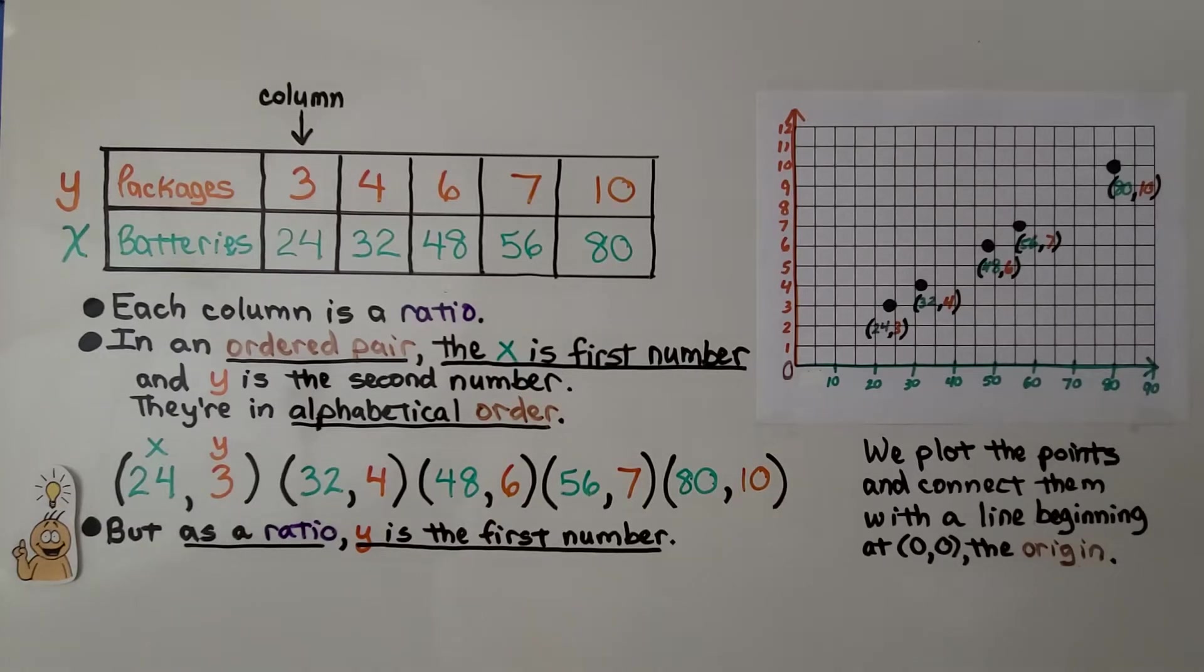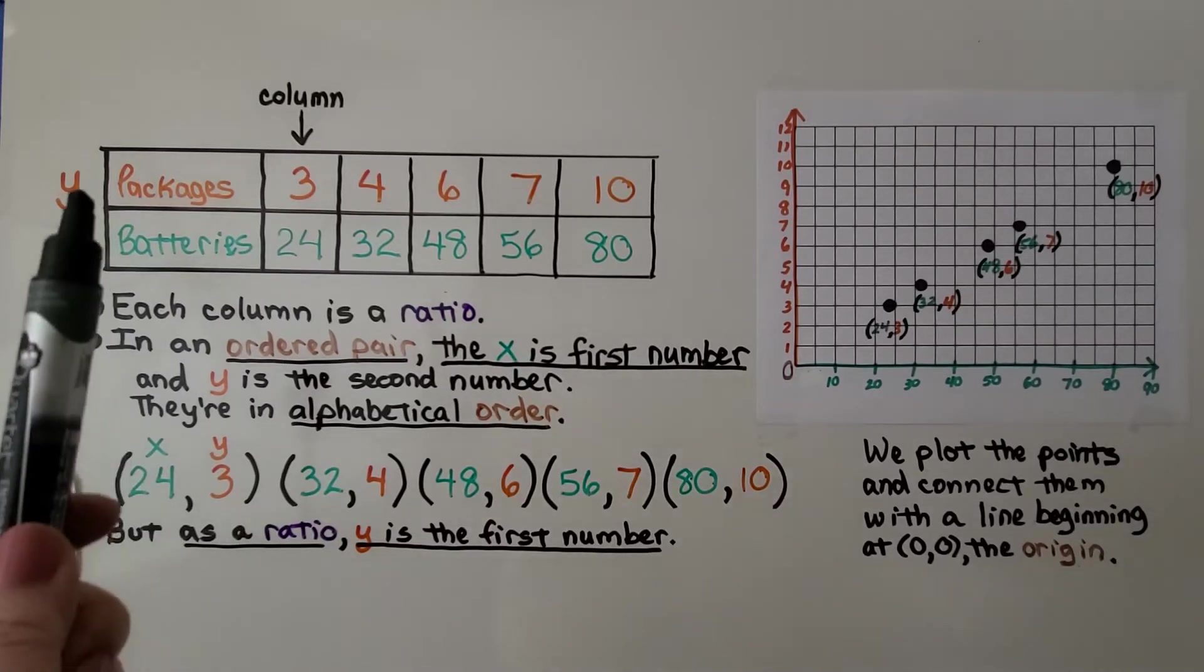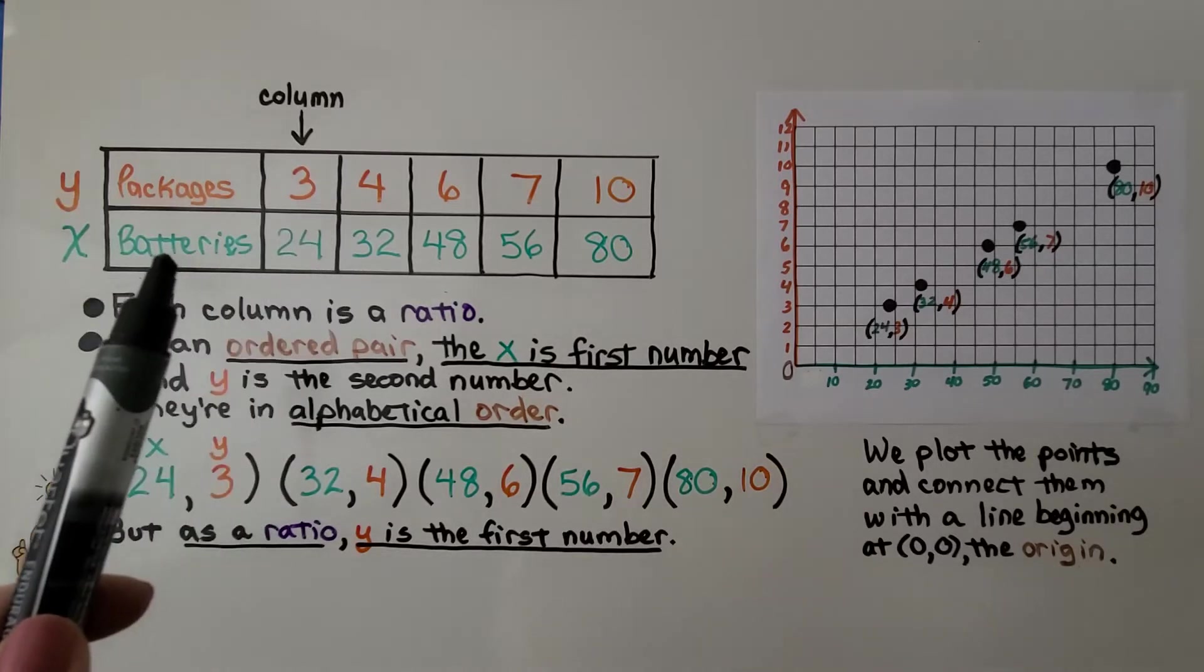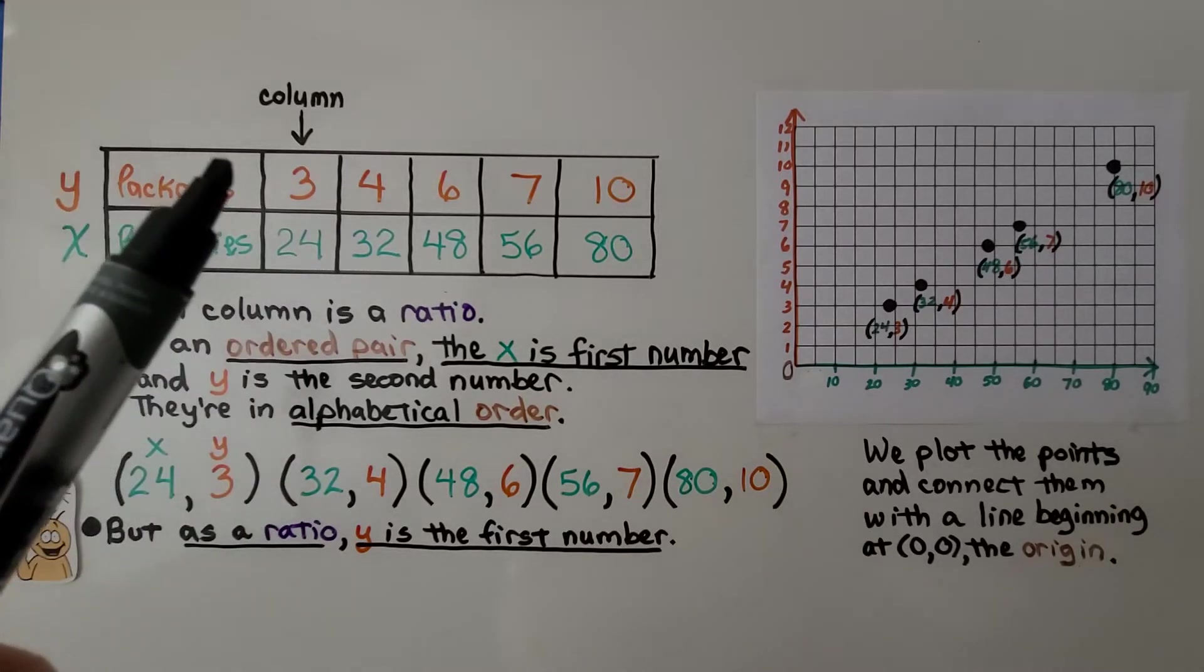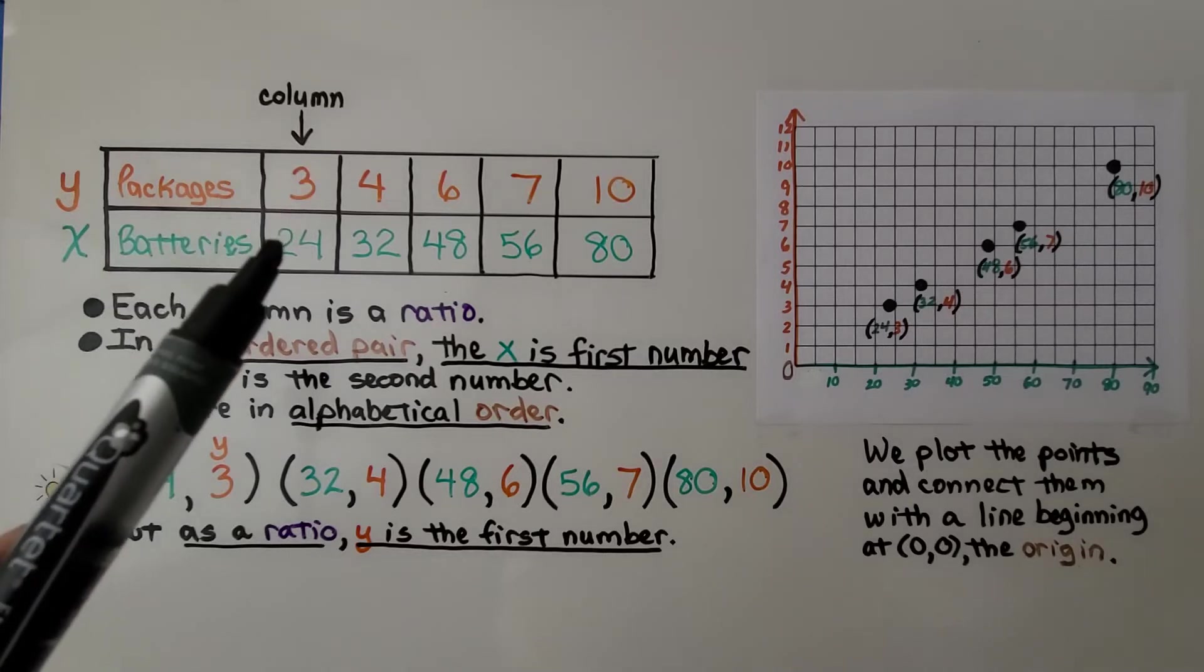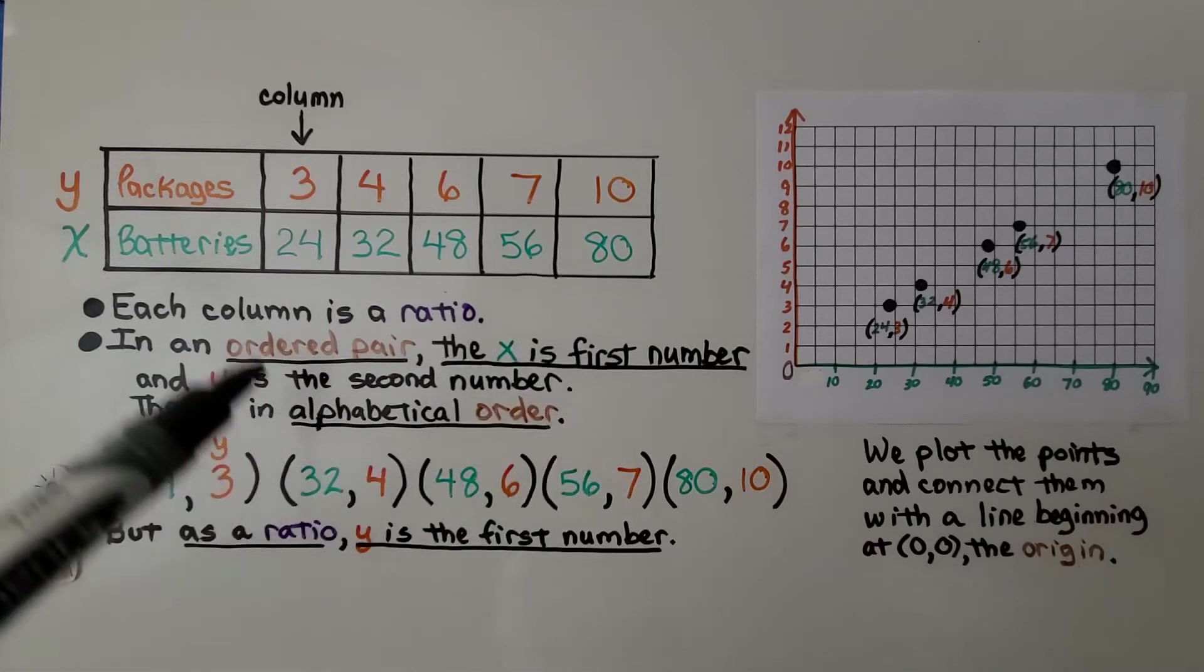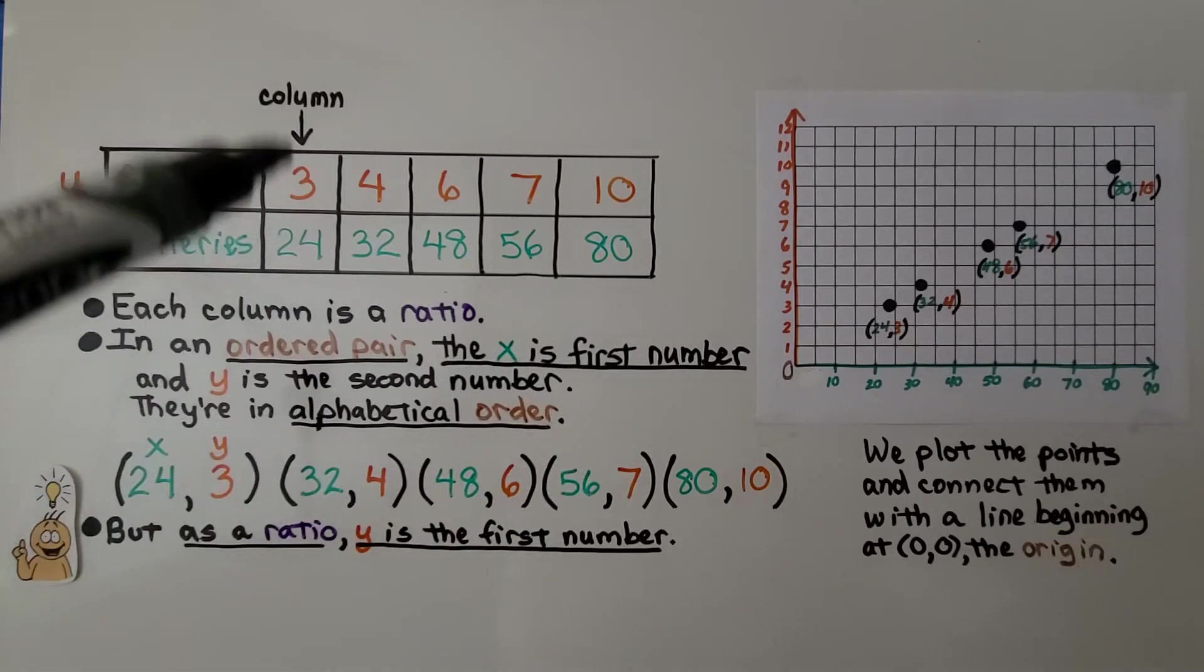In the last video, we did a work problem where we had packages of batteries, and we had a total of batteries in all. And it told us that three packages had 24 batteries, and we needed to fill in the table. And we found our values. Well, each column is a ratio.